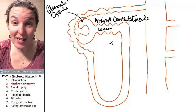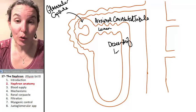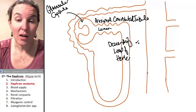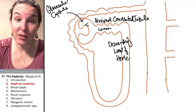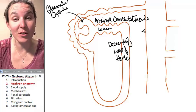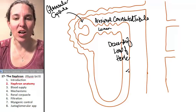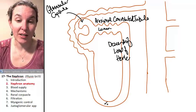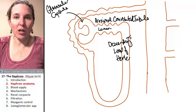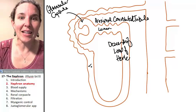This is my descending loop of Henle. So filtrate is going to come in through glomerular capsule into the proximal convoluted tubule and down the descending loop of Henle. This is what they call a hairpin turn. They can be super long and they descend into the medulla of the kidney.